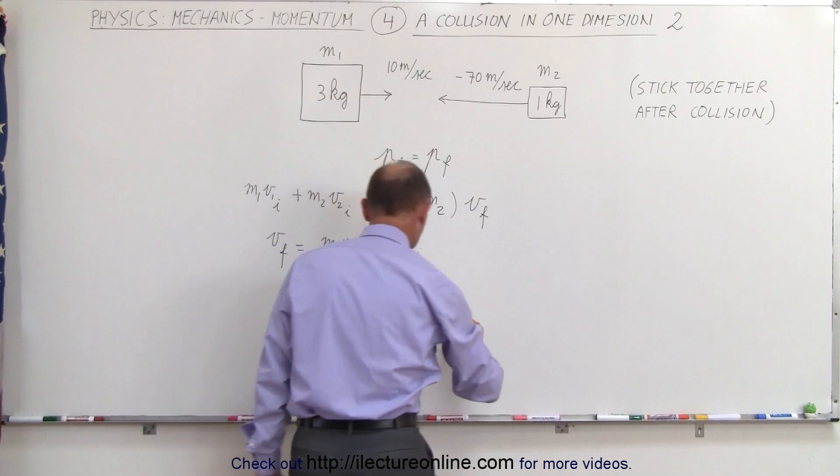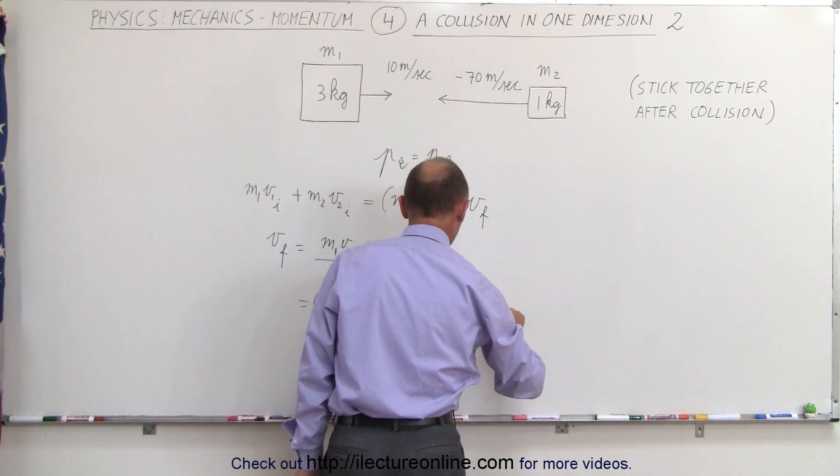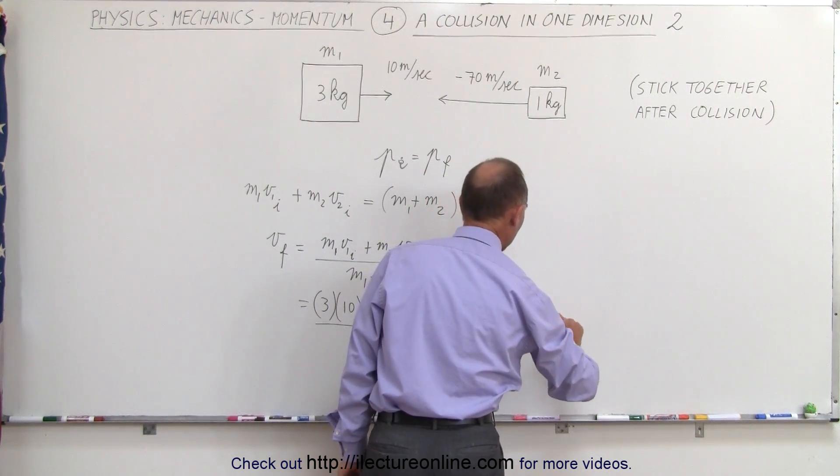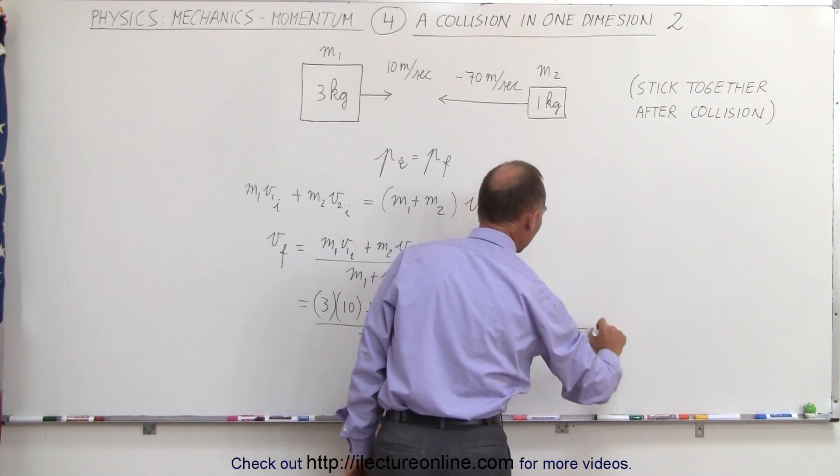If we solve for this, we get the following. This is equal to 30 minus 70 divided by 4, which is minus 40 divided by 4, which is equal to minus 10.